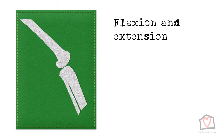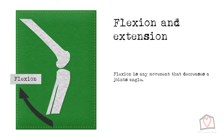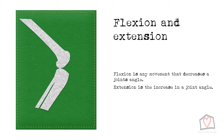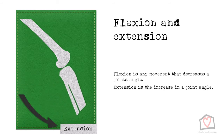We will look at the common movements and their definitions before looking at specific joints. The first pair of movements are flexion and extension. Flexion is any movement that decreases a joint angle, closing the space between two bones — this occurs, for example, as the elbow bends. Extension is the increase in a joint angle, and in this example would refer to the straightening of the elbow joint.